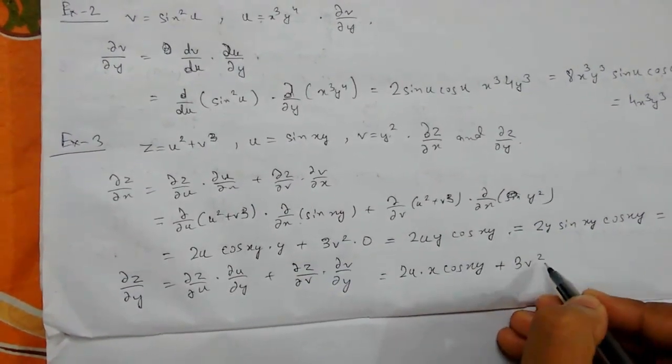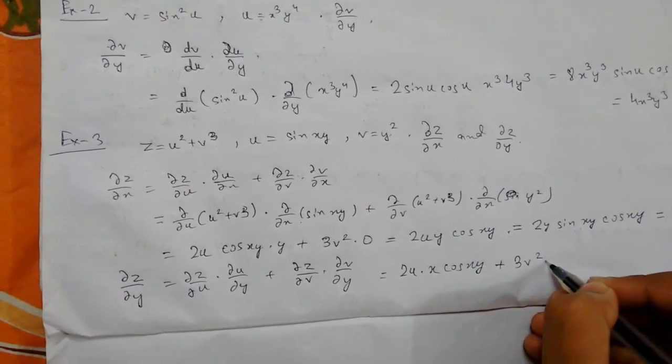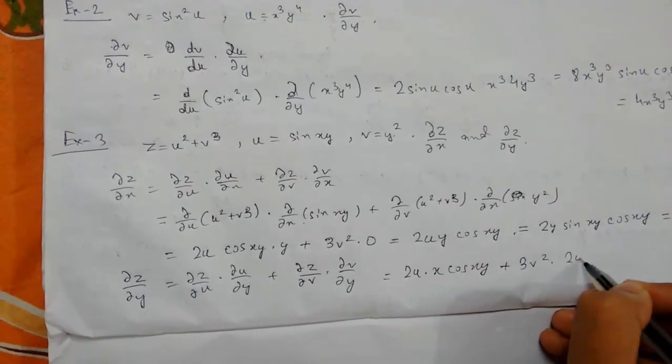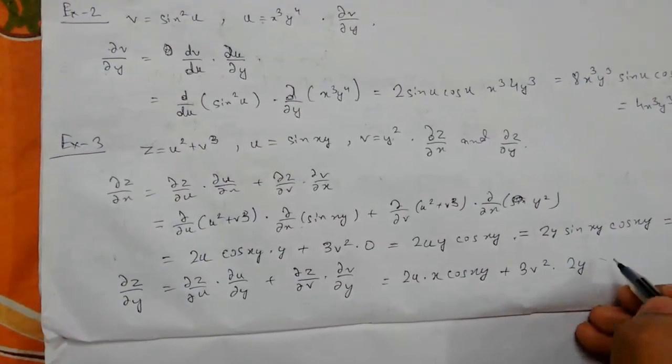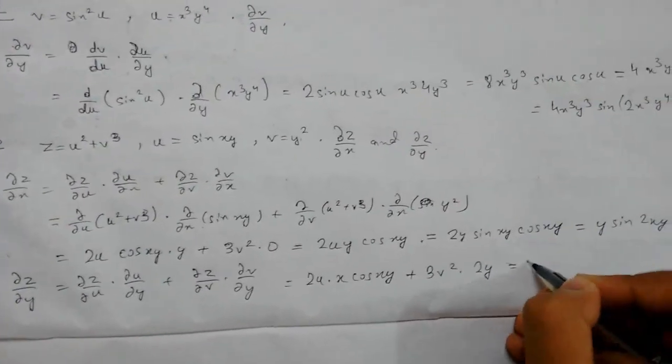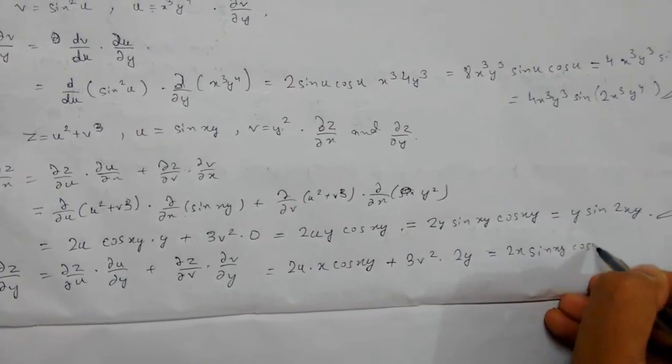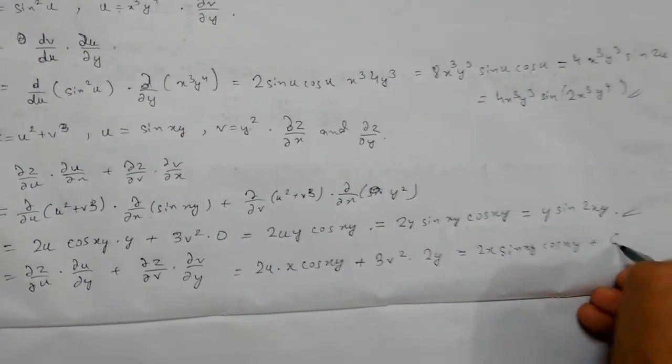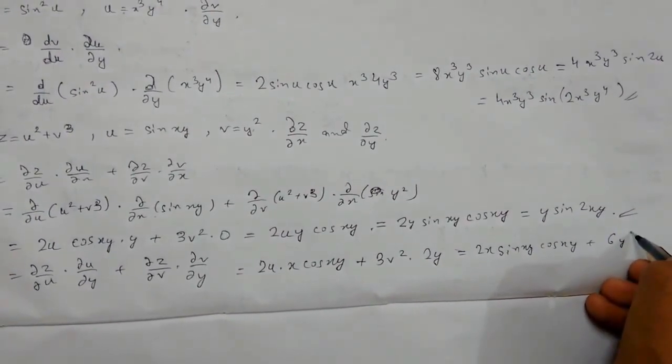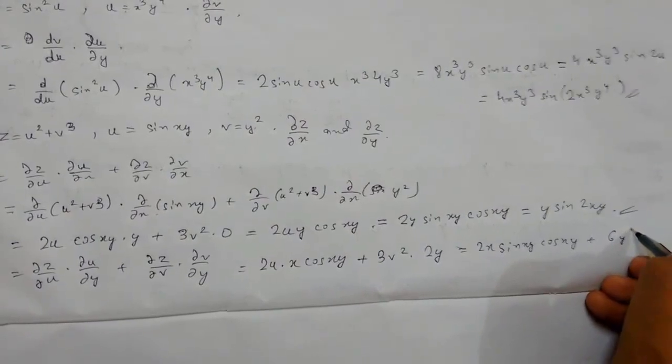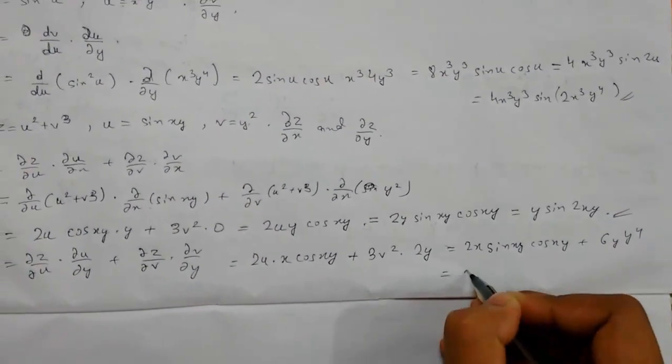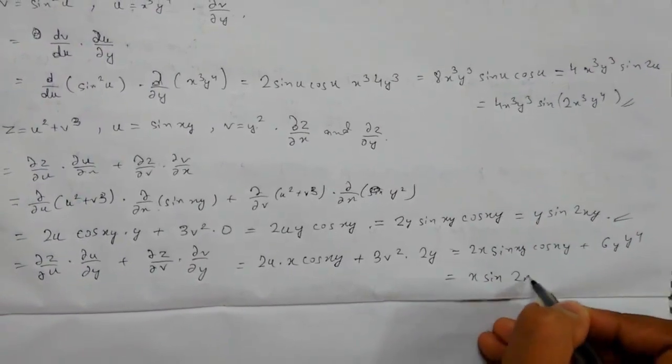Simplifying we get 2x·sin(xy)·cos(xy) + 4y·v. Putting v = y², we get x·sin(2xy) + 4y³. This is our answer.